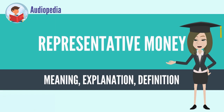The term representative money has been used variously to mean the claim on a commodity, for example gold certificates or silver certificates. In this sense it may be called commodity-backed money, any type of money that has face value greater than its value as material substance. Used in this sense, most types of fiat money are a type of representative money.